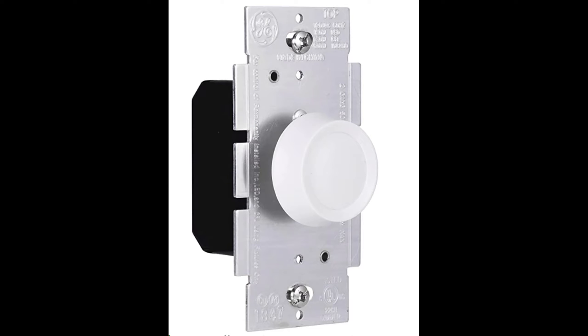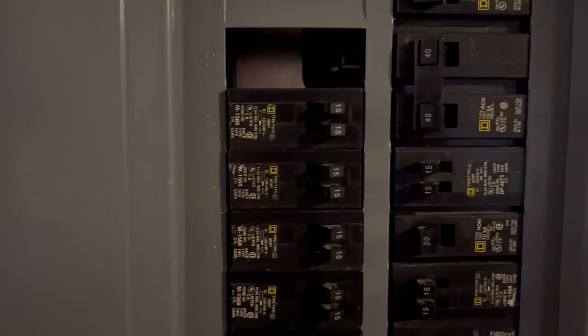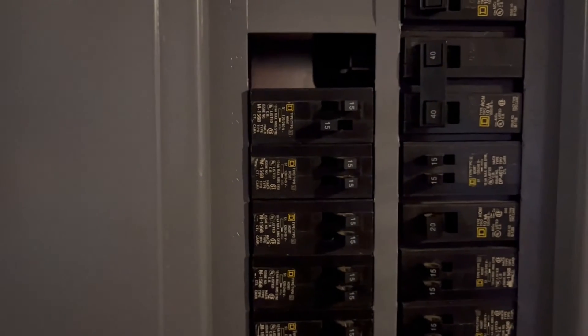I'm going to show you how easy it is to install a rotary dimmer like this one or slider dimmer like this one. First, switch off the power to the light at the breaker panel.